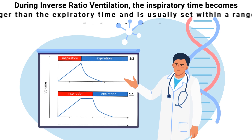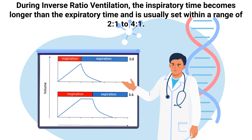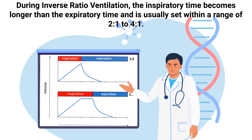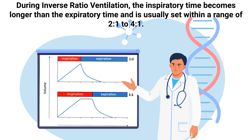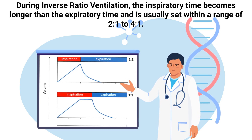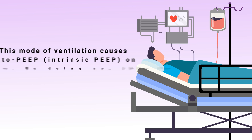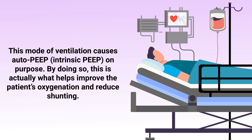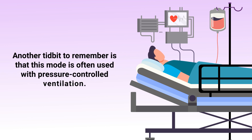During inverse ratio ventilation, the inspiratory time becomes longer than the expiratory time and is usually set within a range of 2:1 to 4:1. This mode causes auto-PEEP or intrinsic PEEP on purpose, which is what helps improve the patient's oxygenation and reduce shunting.